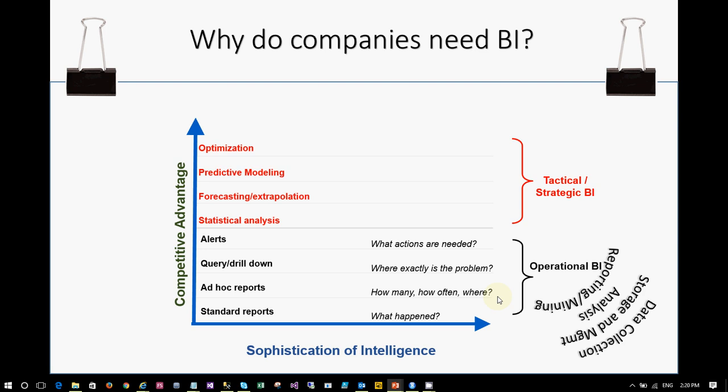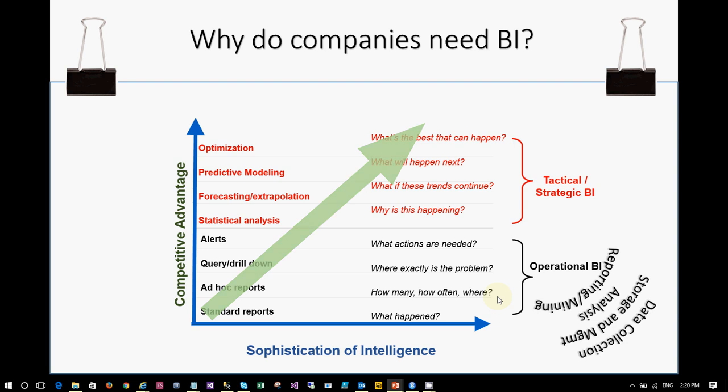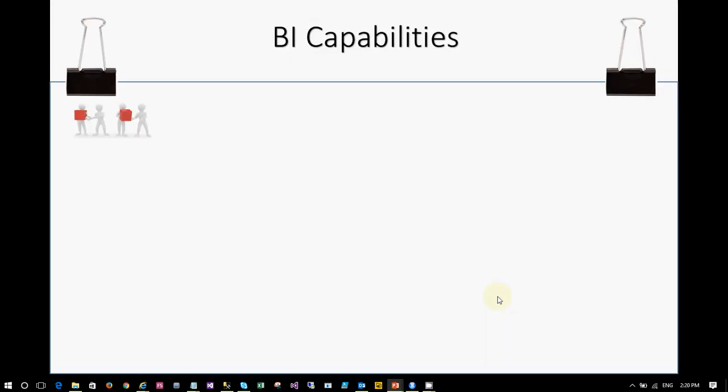Tactical and statistical BI involves statistical analysis, forecasting, predictive modeling, and optimization. It answers questions like: why is this happening, what if the trends continue, what will happen next, and what is the best that can happen. If you want to stay competitive in the market, you need to adopt more statistical BI through predictive modeling and optimization. This deals with data science, machine learning, and statistical and predictive analysis — which is what companies need from business intelligence to grow.